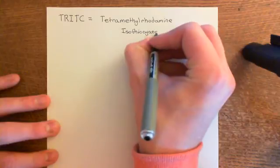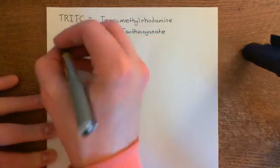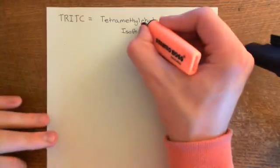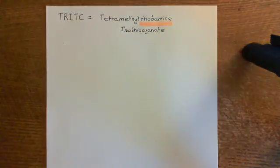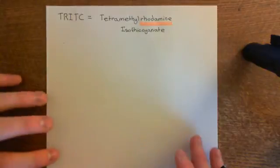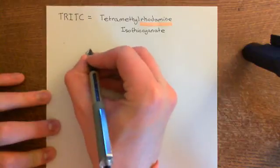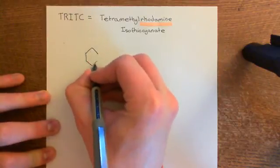The whole structure is very similar to the structure of FITC. We'll start off by looking at the structure of the rhodamine molecule, because this is what the whole thing is based on. We'll then progress to tetramethyl rhodamine, and then finally we'll add an isothiocyanate group on to get tetramethyl rhodamine isothiocyanate. So let's draw out the structure of rhodamine - basically it's almost identical to fluorescein.